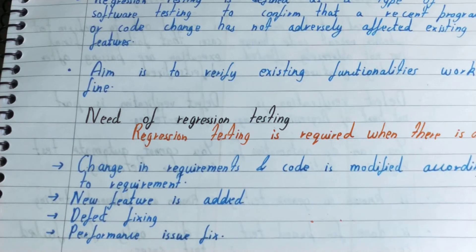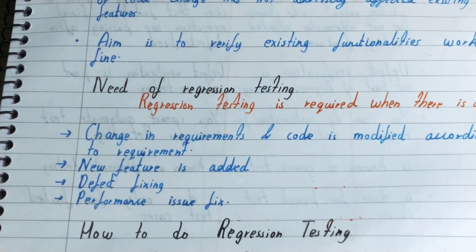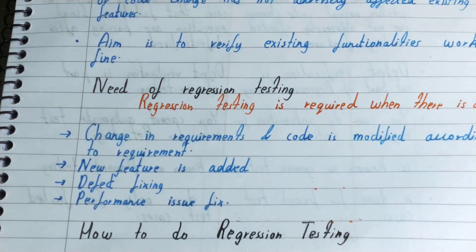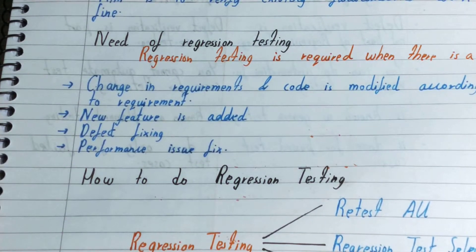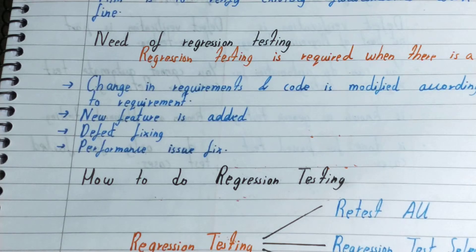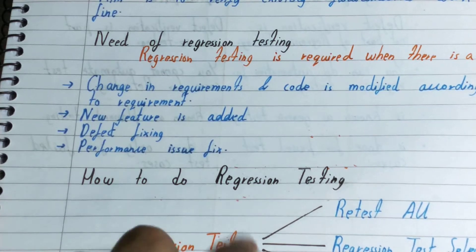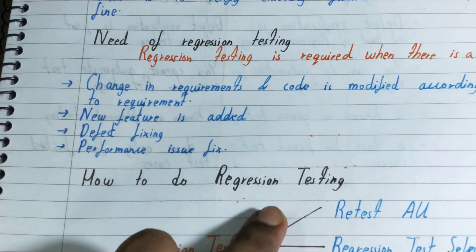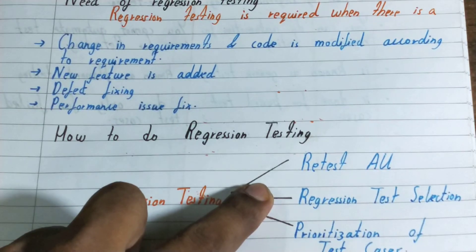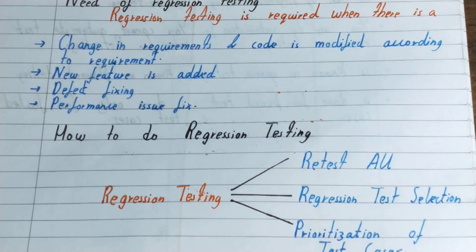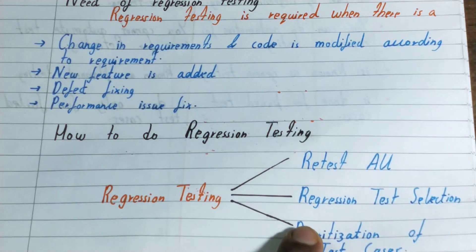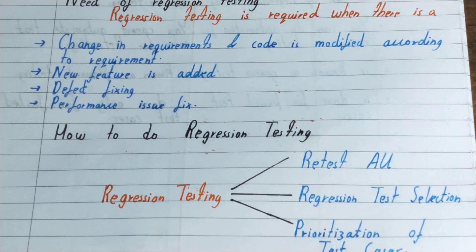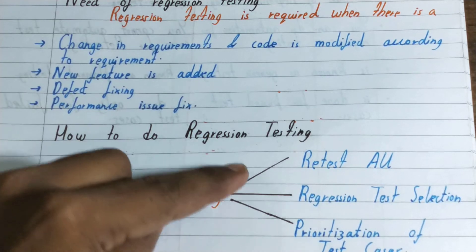Now let's look at how to do regression testing. There are three basic techniques. First is retest all — retest every line of code and every feature. It will take a lot of time but provides high assurance. Second is regression test selection — you select a specific module or part of the software for testing, targeting the part you know will be affected. This is quicker but doesn't give as much assurance as retest all.